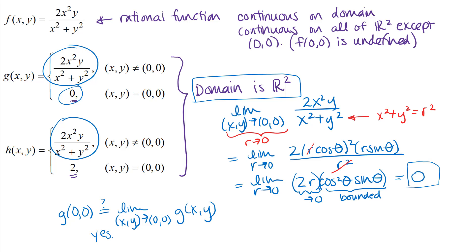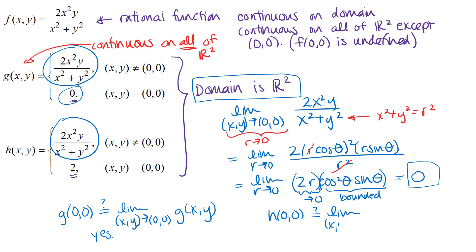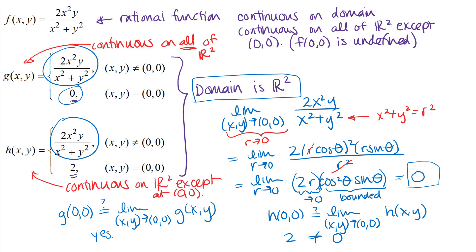The h function, by contrast, has a difficulty. h(0,0) = 2, but the limit as (x,y) approaches (0,0) for h is not 2 — it is zero. So the h function is not continuous at (0,0); it is continuous everywhere except at the origin. The reason it fails continuity at (0,0) is that the limit and the function output value are not equal at that point. Try some homework problems determining where a function is continuous and where it is not.